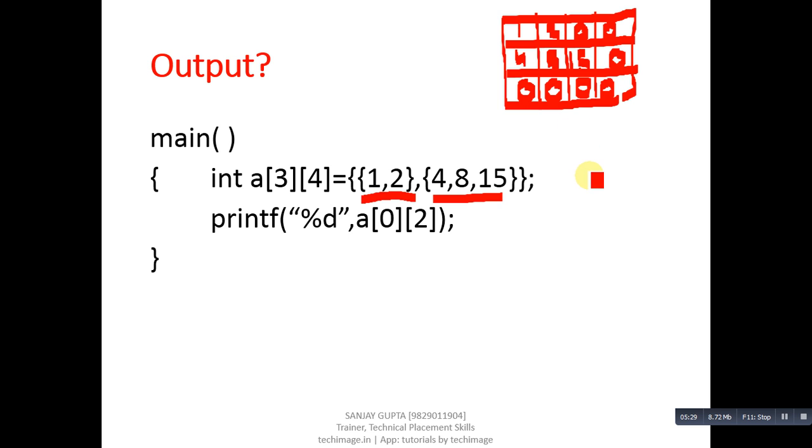Okay, now we have to print a[0][2], so 0 index, 1 index, and 2 index. Similarly, 0 index, 1 index, 2 index, and 3 index. So we have to print 0, 2, so 0, 2 means this location. This location contains 0, so output will be 0. Remember, if we initialize any 1D or 2D array with less number of values, then the remaining values will be automatically 0.